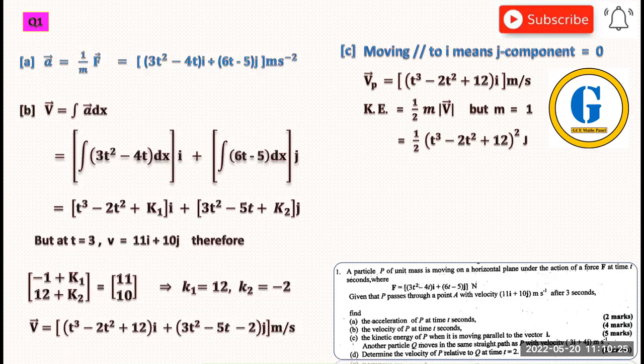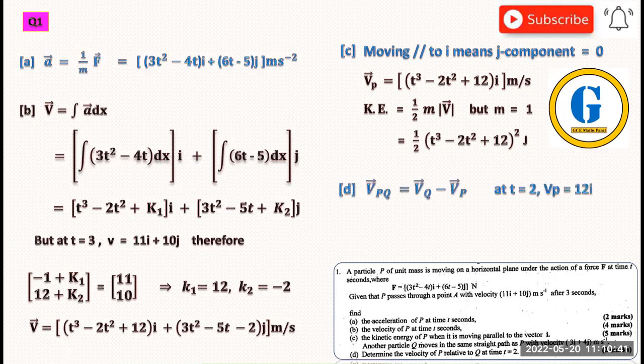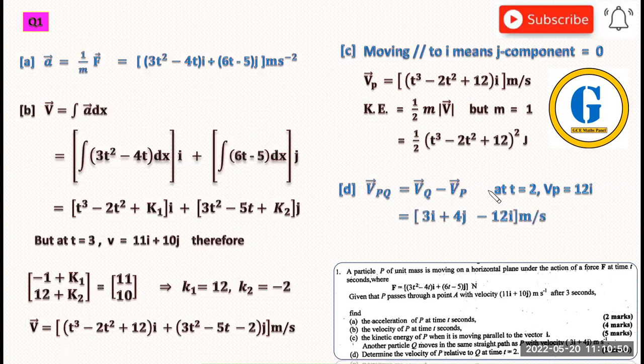Part (d): Another particle Q moves in the same path as P with velocity 3i + 4j meters per second. Determine the velocity of P relative to Q at t = 2. The relative velocity of P with respect to Q is V_PQ = V_Q - V_P. At t = 2, this gives us (3i + 4j) - 12i = -9i + 4j meters per second.